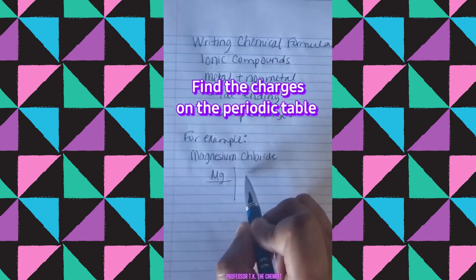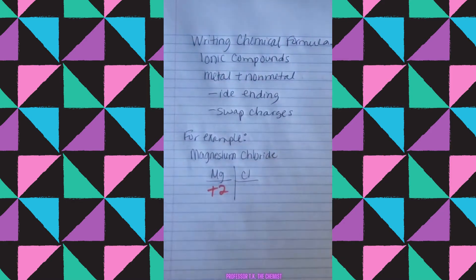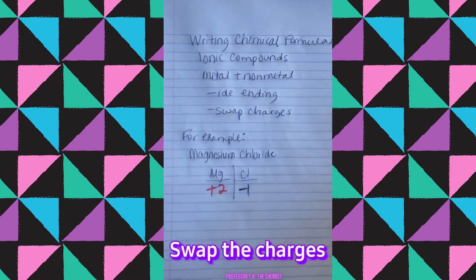First thing you need to do is find the charges on the periodic table for your given element. And once you do that, all you're going to do is swap those charges.